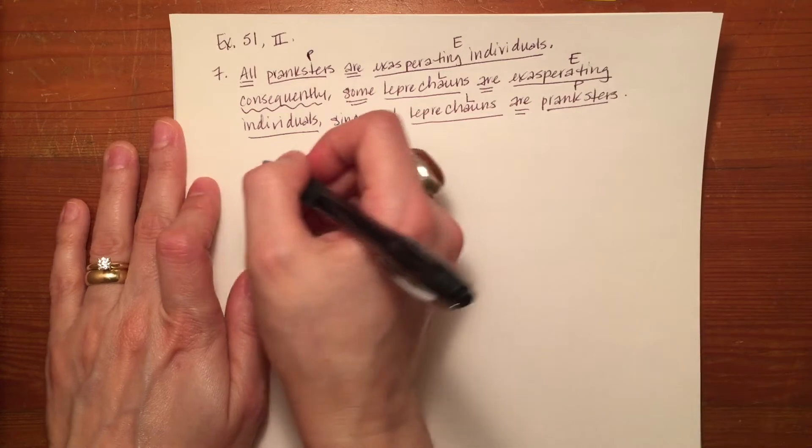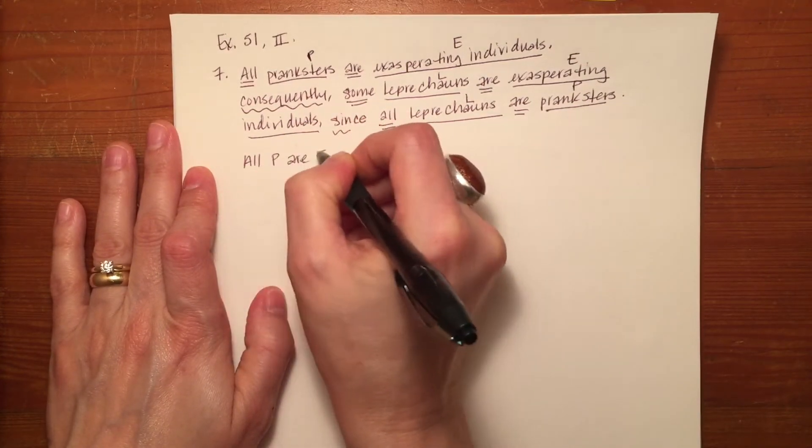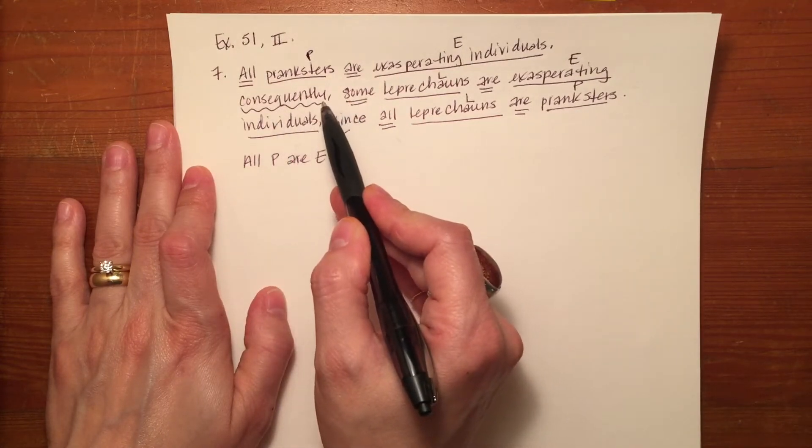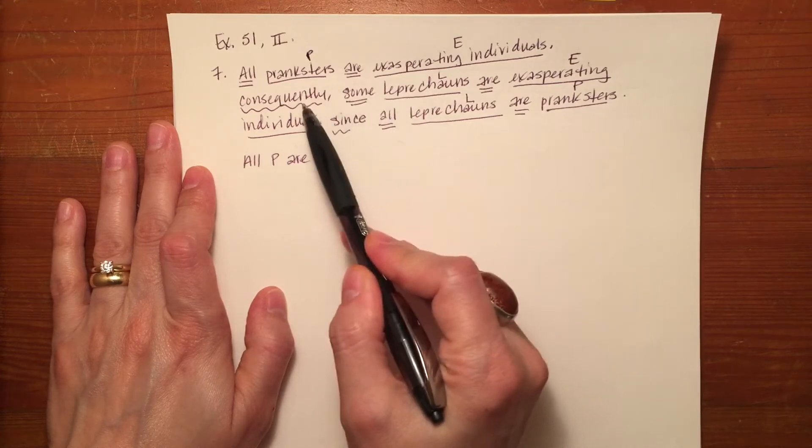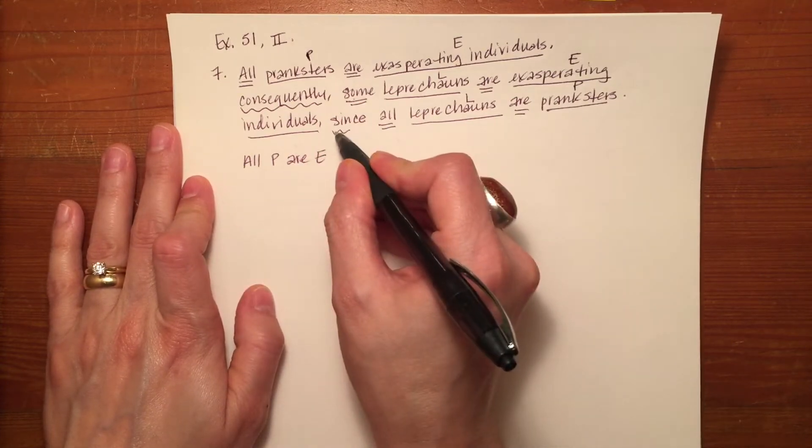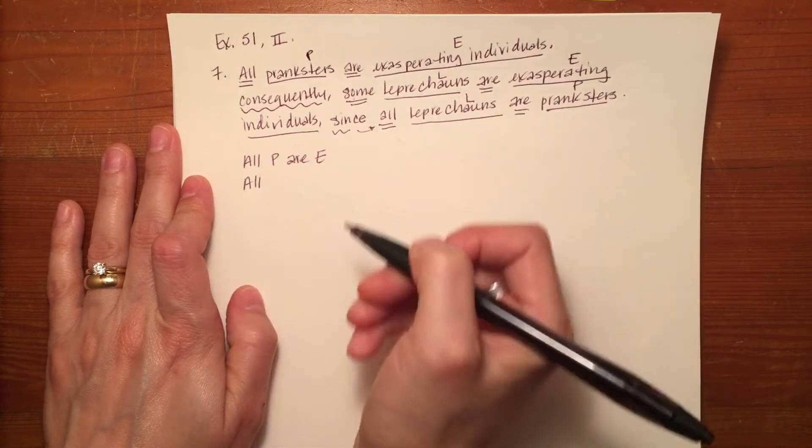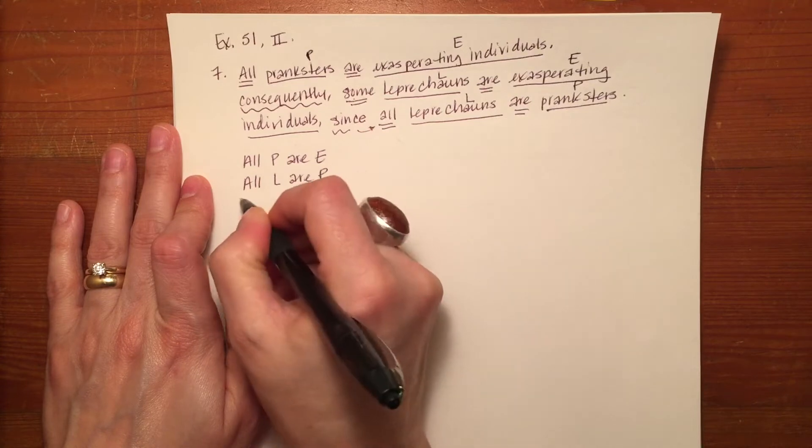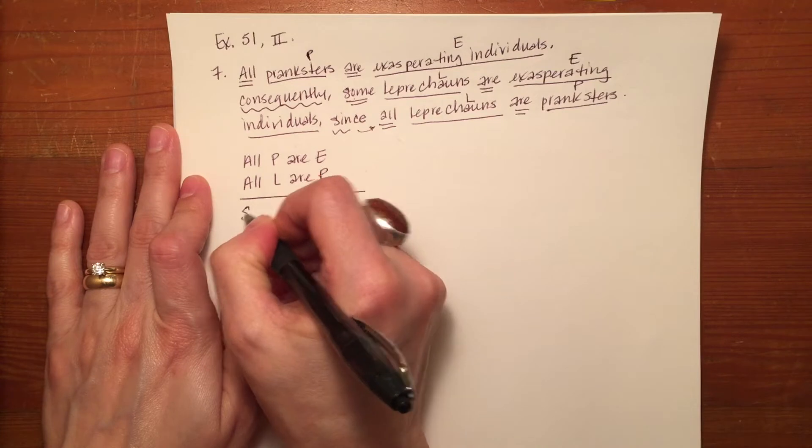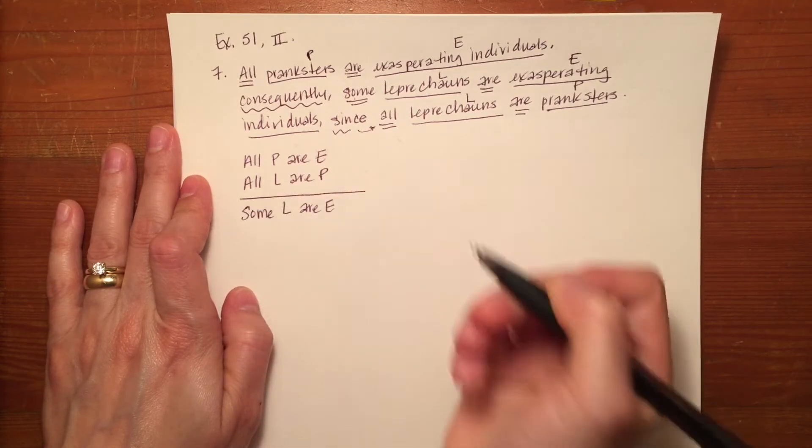So what I end up with here, when I put it into standard form initially, is all P are E. I know that consequently identifies my conclusion, so the statement right after consequently will be my conclusion, so I'll leave it until last. But since is going to indicate that this is a premise. So my second premise will be all L are P. I draw a large line for my therefore. Then I've got some L are E as my conclusion.